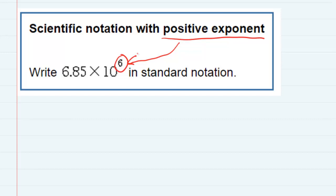Since it's a positive exponent, and that means large numbers, if I'm going to move this decimal and make that a large number, I would be moving it to the right. So 6.85, I would move that decimal to the right. And the exponent tells me how many times to move it. It says to move it six times.